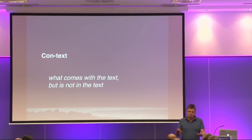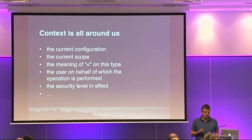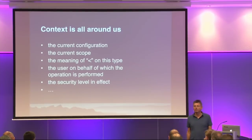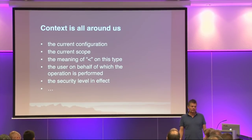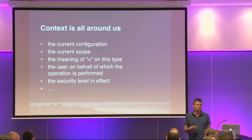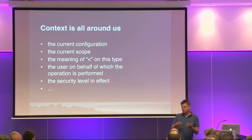It's what you need to understand together with the text in order to understand the text. The text in our case is usually a program. So, context really is all around us. For instance, when you run a program, then implicitly you rely on the current configuration — it's not part of your program, but it will influence what your program does. Furthermore, the current scope — where does your program execute — is important. If you want to find out the meaning of, let's say, the operation less on this type, then that's often not at all directly clear. It could be inherited from somewhere, or in some languages there's a type class construct where this thing gets imported, or other languages have extension methods. So, what even a simple thing like A less than B means is very, very context dependent usually.